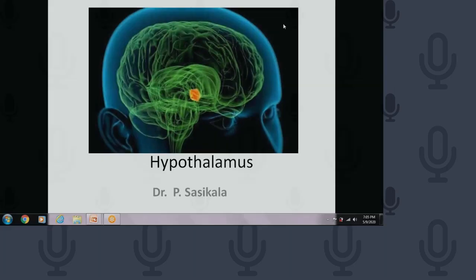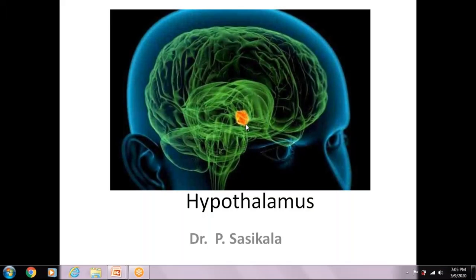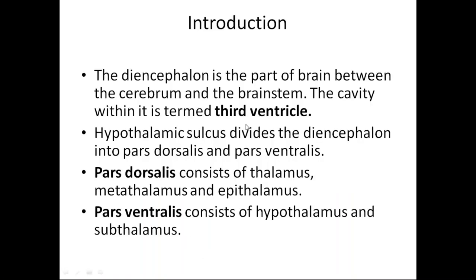This conference will now be recorded. The diencephalon is a part of the brain between the cerebrum and brainstem. Its cavity is the third ventricle. The hypothalamic sulcus divides the diencephalon into two parts: pars dorsalis and pars ventralis. Pars dorsalis consists of the thalamus, metathalamus, and epithalamus. Pars ventralis consists of the hypothalamus and subthalamus.